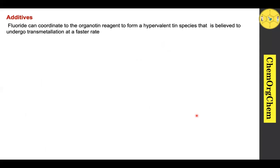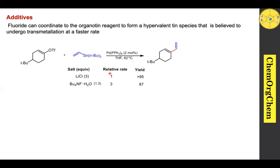Moving on to another type of additive: fluoride. Fluoride can coordinate to the organotin reagent to form a hypervalent tin species that undergoes transmetalation at a faster rate. For example, this aryl triflate reacts with vinyl stannane under palladium catalysis. When using lithium chloride additive, 95% yield is obtained with a relative rate of 1. When using tetrabutylammonium fluoride, the relative rate increases to 3 with 87% yield, clearly indicating that fluoride ions accelerate the reaction rate. This hypervalent tin species is believed to form in situ under these reaction conditions.